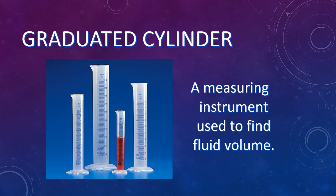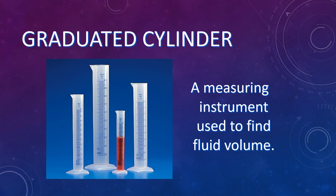Here is a graduated cylinder. They come in a variety of different sizes and we use this to measure fluid volume. If you are measuring something and they say to put it into a beaker, you would first measure the amount in a graduated cylinder and then put it into a beaker, because a beaker is a very rough estimate — the graduated cylinder is more precise and accurate for measuring liquid volume.